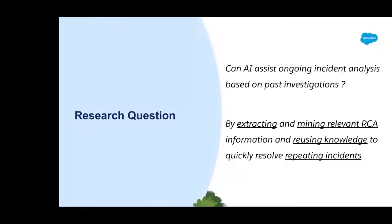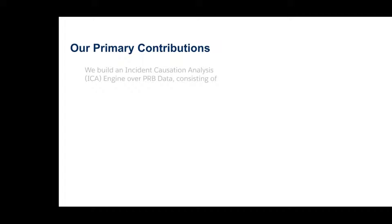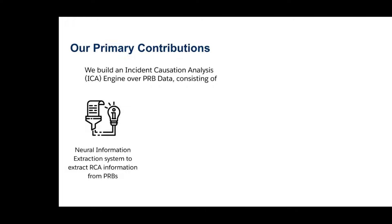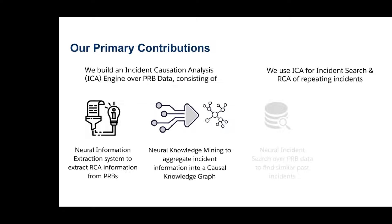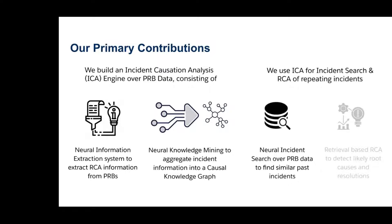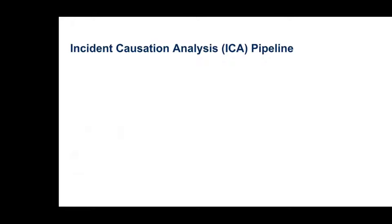We achieved this by extracting and mining relevant RCA information from PRB data and reusing this knowledge to quickly resolve repeating incidents. Our primary contribution was building an Incident Causation Analysis engine, ICA, over this PRB data. It consists of: first, a neural information extraction system to extract RCA information from unstructured PRBs; second, neural knowledge mining to aggregate incident information into a causal knowledge graph; and then we use ICA for neural incident search over the PRB repository to find similar past incidents and perform retrieval-based root cause analysis to detect likely root causes and resolutions given an incident symptom.